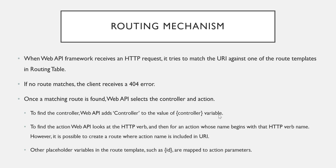To find the controller, Web API adds the controller name to the value of the controller variable. For example, if you pass 'product' as the controller name, it maps to 'ProductController'. To find the action method, it looks at the HTTP verb — whether the request is GET, POST, PUT, etc. Based on the HTTP verb, it determines the action whose name begins with that verb. While naming Web API action methods, they must start with the HTTP verb, otherwise you need to put the HTTP verb attribute above your action method.